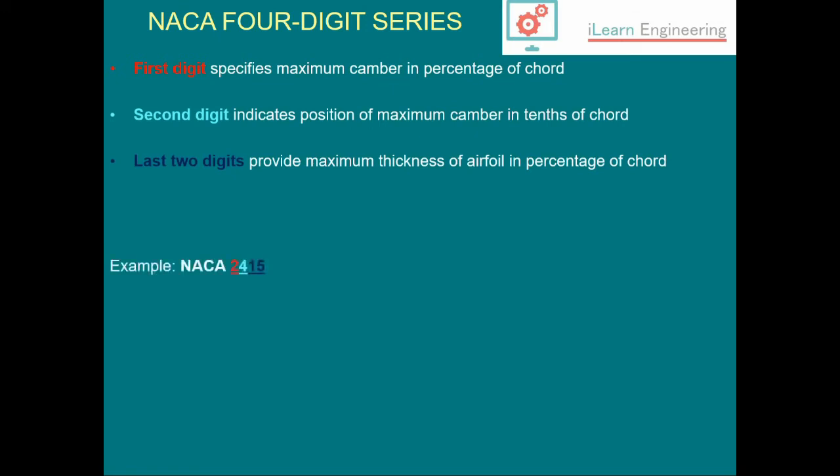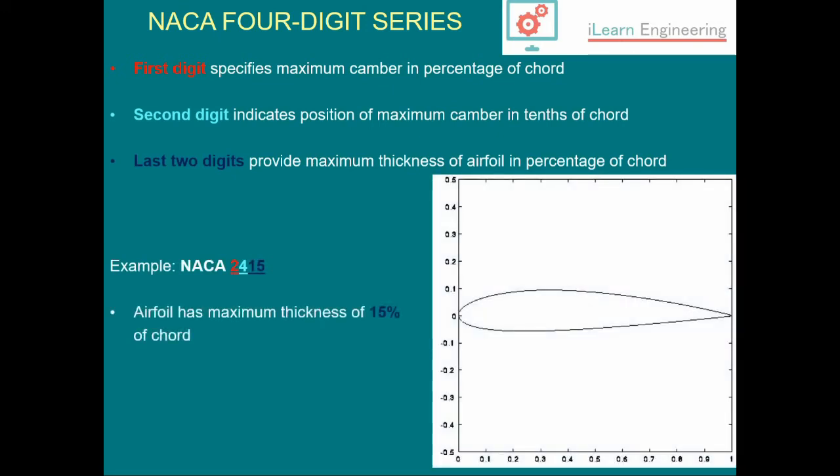Best shown with an example: the NACA 2415. This airfoil has a thickness of 15% as indicated by the last two digits, a camber of 2% as indicated by the first digit, and that will be located 40% or four tenths of the way back from the airfoil leading edge. There are lots of these airfoils you can find off the shelf.